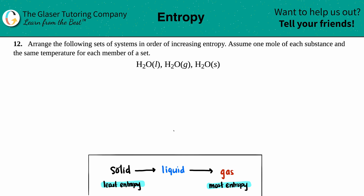Number 12: arrange the following sets of systems in order of increasing entropy, assuming one mole of each substance and the same temperature for each member of the set. In this case, we have all water — H₂O, H₂O, H₂O — the only difference is that one is a liquid, one is a gas, and the other is a solid.